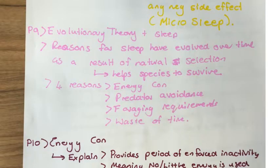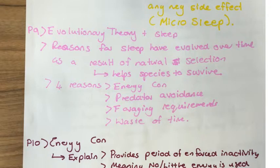We now move on to the second main section — evolutionary theory. The reasons for sleep have evolved over time as a result of natural selection. By having these characteristics in place, this allows a species to survive and continue reproducing. The four main evolutionary theories are: energy conservation, predator avoidance, foraging requirements, and waste of time theory.